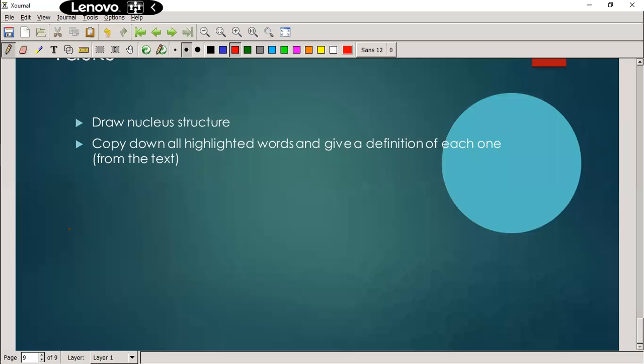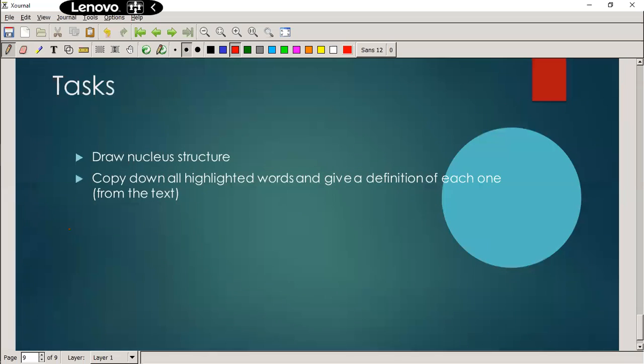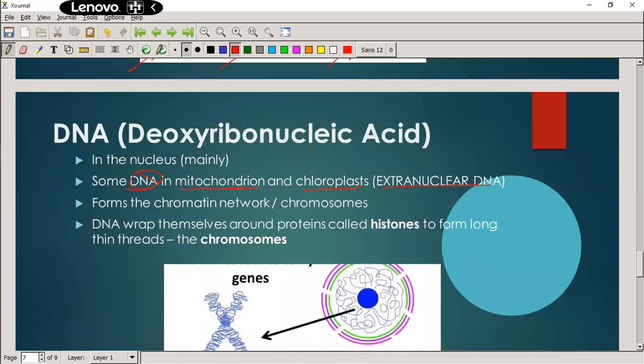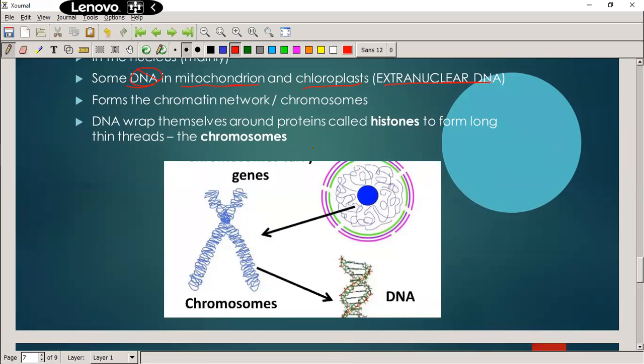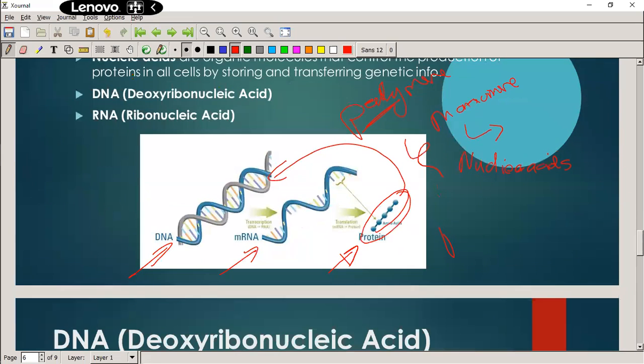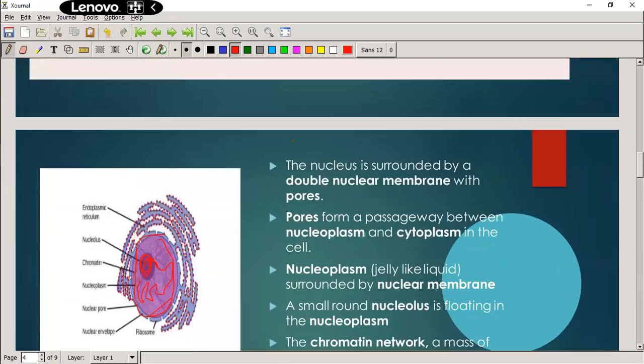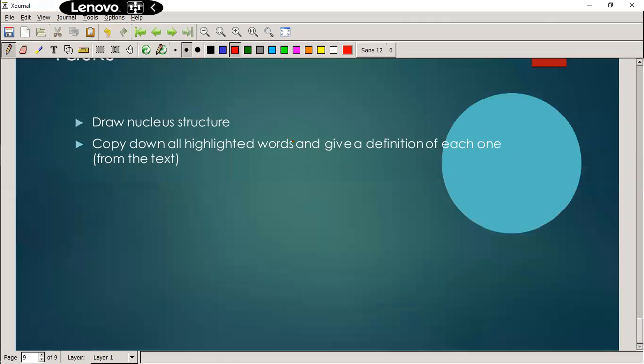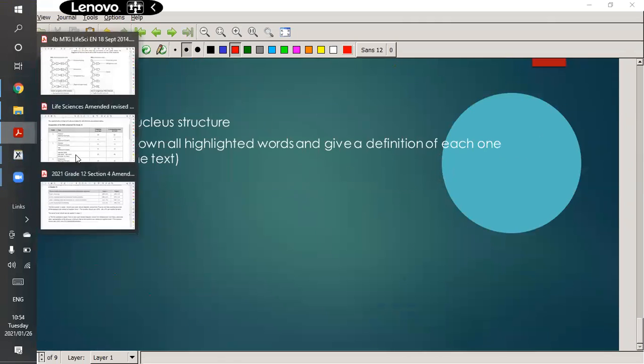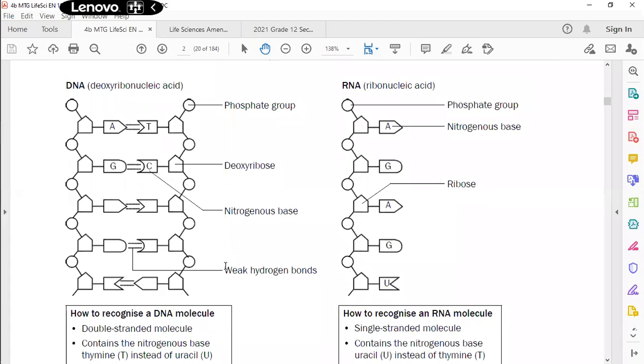What do we need to do for lesson one? Find the nucleus structure, and then copy down all the highlighted words and give a definition of each one. Inside here there's some highlighted words: histones, chromosomes, RNA, DNA, nucleic acids. All those highlighted words, give me a definition of each one. Then also go to your Mind the Gap book, there's the DNA structure, and you can draw the DNA structure as well into your books. That's your task for lesson one.